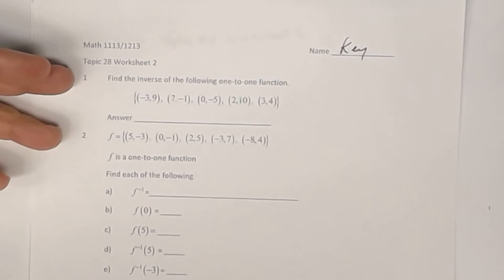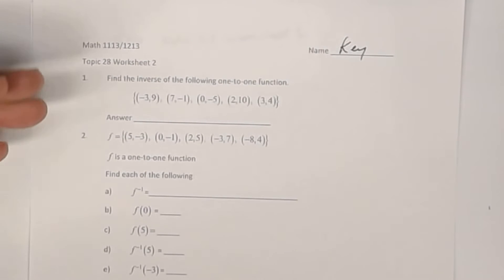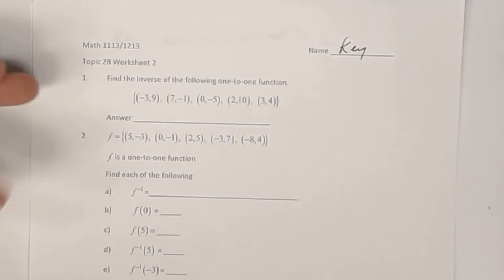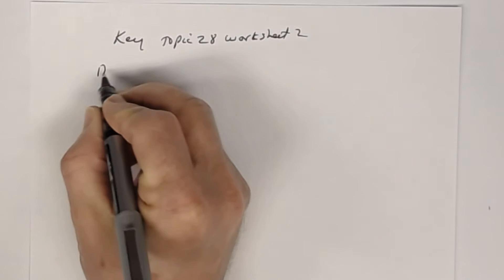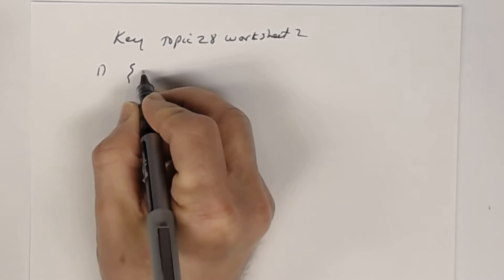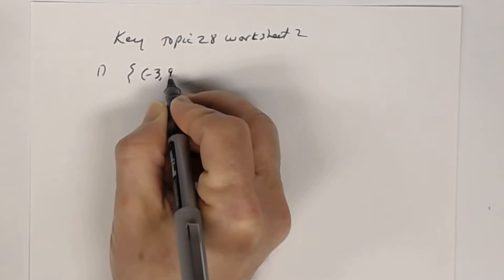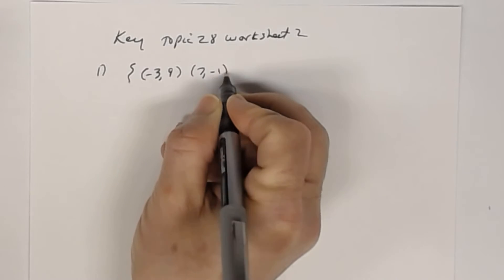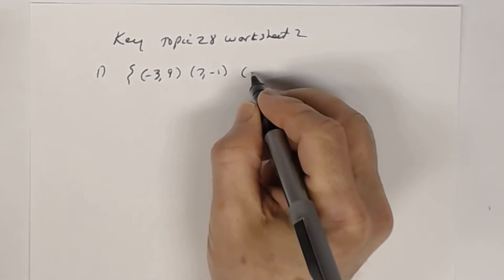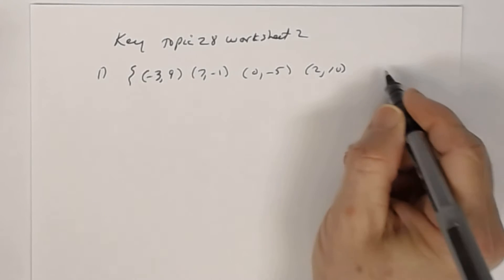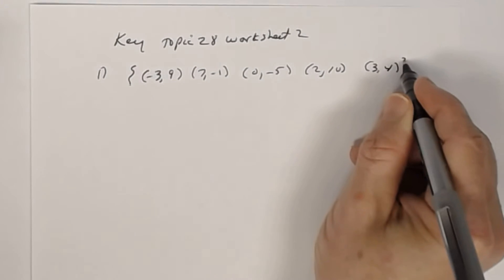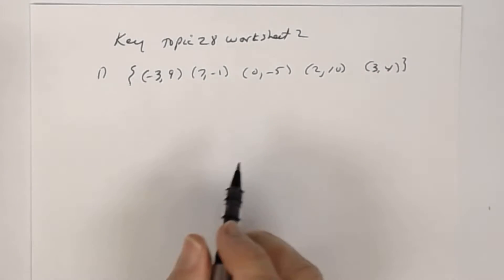You are told that this is a one-to-one function. Even if you were not told that, you could easily determine that it is one-to-one. So let's talk about why. In number 1, this function has the pairs: (-3, 9), (7, -1), (0, -5), (2, 10), and (3, 4). Let's see why that's one-to-one.